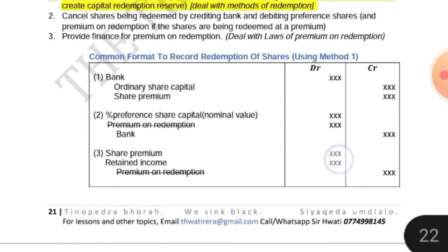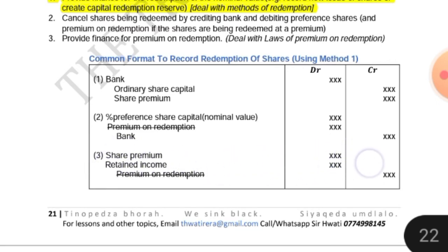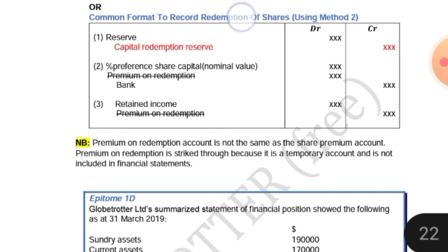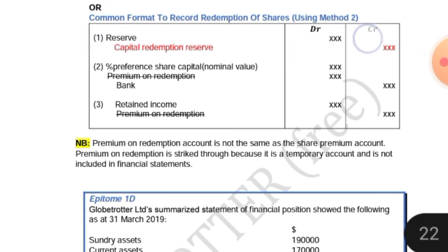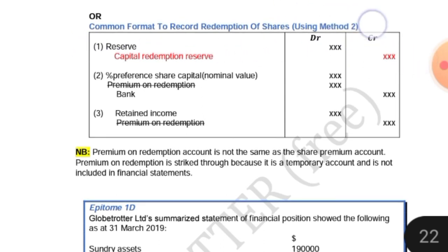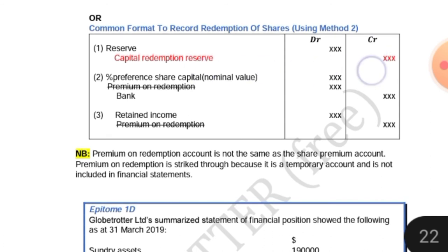On the debit side, we need an amount equal to the premium on redemption on the credit side. This amount may come from share premium or retained income, depending on whether the applicable laws are satisfied. If we use method number two, we debit the reserve being used to finance the redemption and credit the capital redemption reserve — this is how we provide finance for the redemption. Whenever we use internal resources (method two), we create the capital redemption reserve by crediting it and debiting the reserve used to finance that redemption.